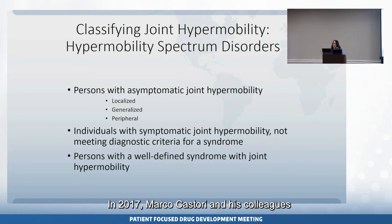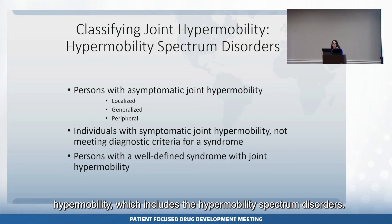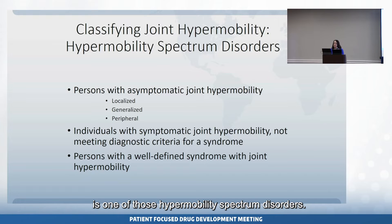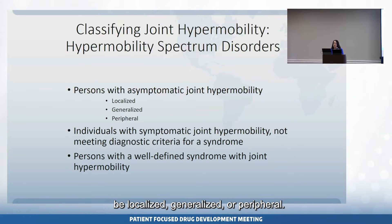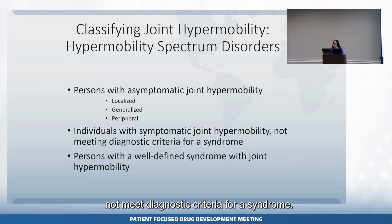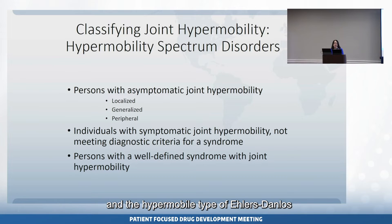In 2017, Marco Castori and his colleagues put forward a framework for classifying joint hypermobility, which includes the hypermobility spectrum disorders. The spectrum includes persons with asymptomatic joint hypermobility, which may be localized, generalized, or peripheral; people with symptomatic joint hypermobility who do not meet diagnostic criteria for a syndrome; and people with well-defined syndromes with joint hypermobility. The hypermobile type of Ehlers-Danlos syndrome falls under that umbrella.